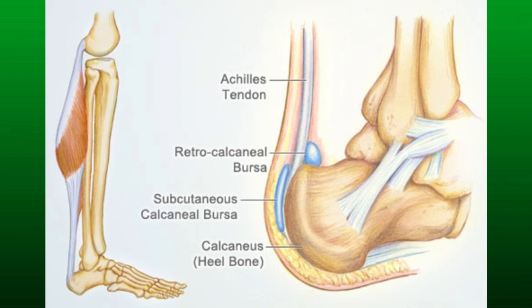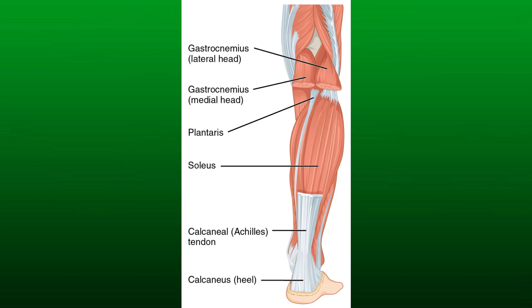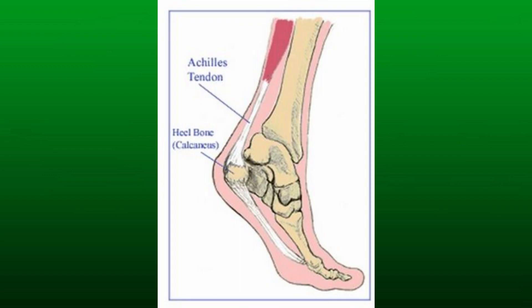The Achilles tendon then inserts into the calcaneus. Small sacks of fluid called bursae cushion the Achilles tendon at the heel. The Achilles tendon is the largest and strongest tendon in the body.